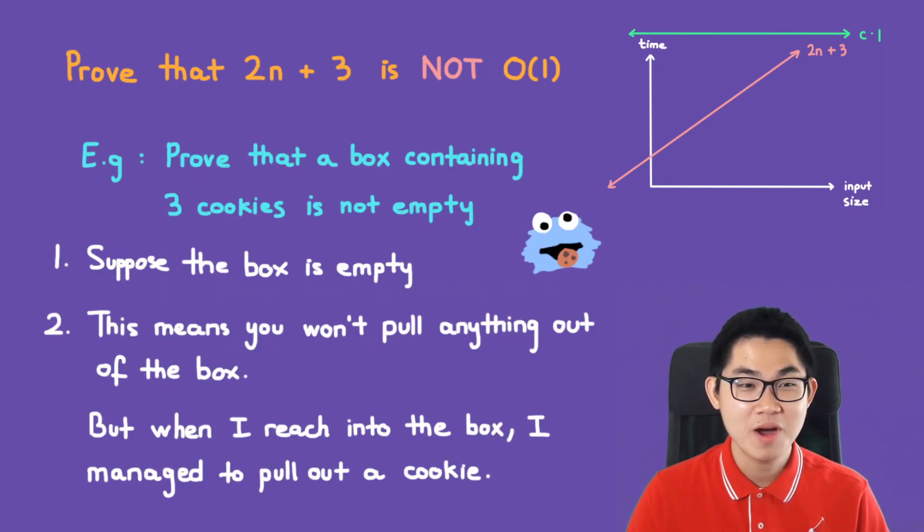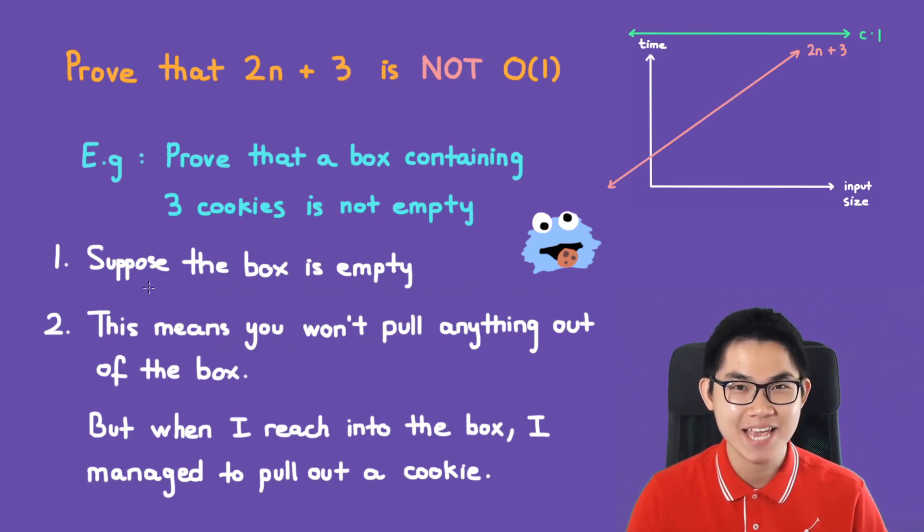For example, we want to prove that a box containing 3 cookies is not empty. So the first step is to negate the statement. So suppose the box is empty. So what does that mean? It means that you won't be able to pull anything out of the box, right?